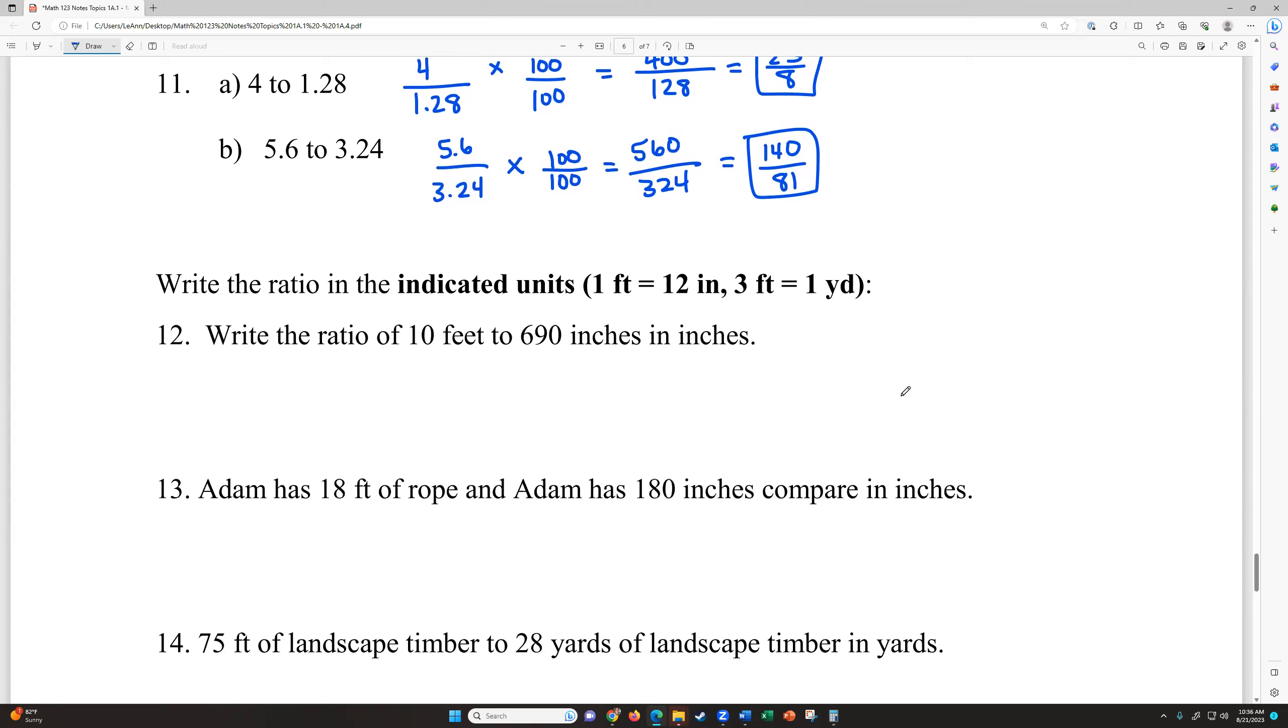So let's look at our next part. It says write the ratio in the indicated units. So notice they want our answer to be in a specific matching set of units. So to do this, we have to know some facts about how we measure in the United States. We measure a foot as 12 inches and three feet make a yard. So write the ratio of 10 feet to 690 inches in inches. So we need both of these to be in inches. So if I times this by 12, because every foot is 12 inches, that will convert that first number to inches. So 10 feet is actually 120 inches. Now I can write my ratio comparing A to B. So 120 over 690. Little side note, you can always cancel out the zeros if they both end in it because one number on top and one number on bottom, because that's like dividing by 10 when you reduce. But I'm going to use the calculator and I get that this is 4 over 23.